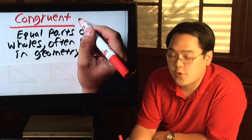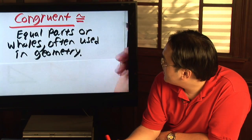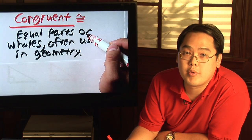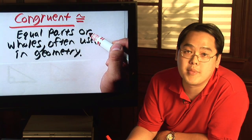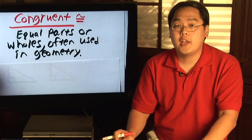Now the symbol for congruent is a wavy line with an equal sign right below it. That's why they can be confused with each other, but they're not quite the same.